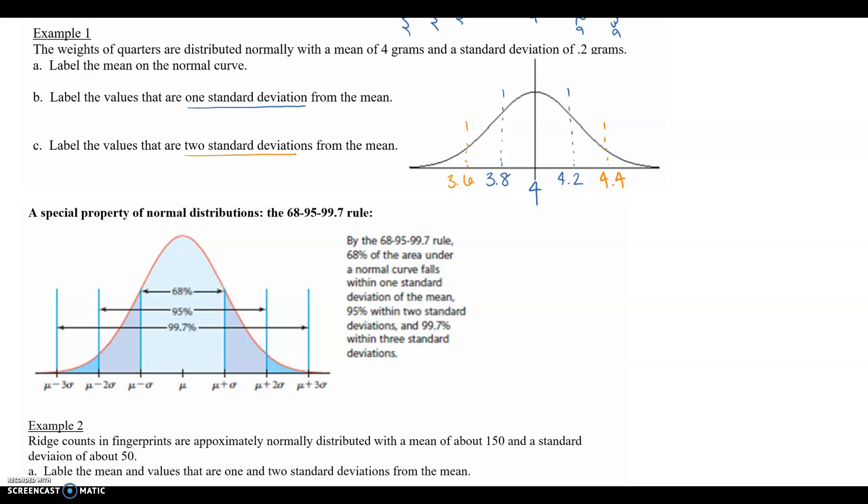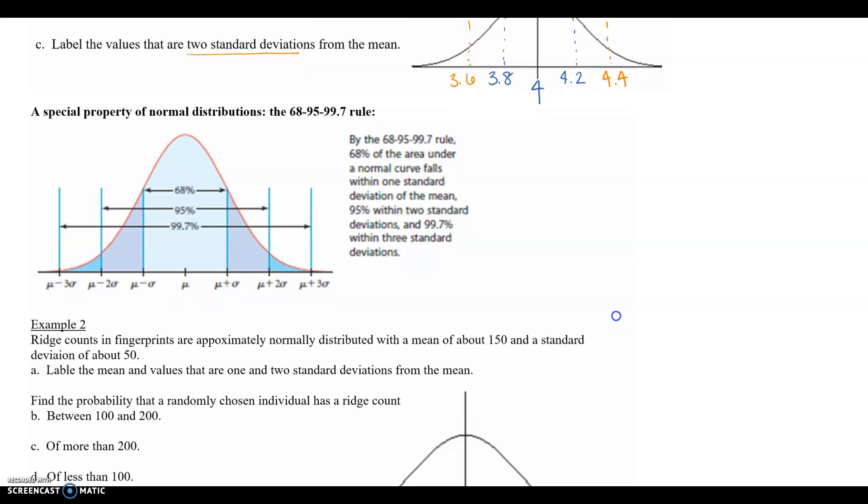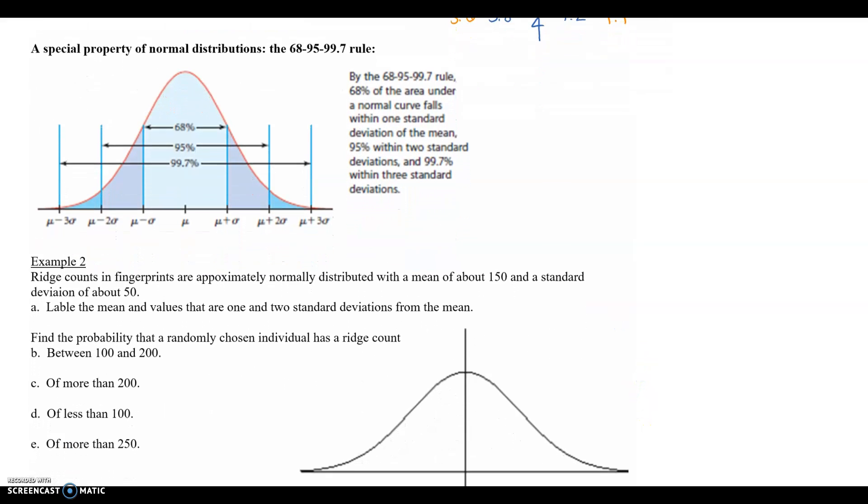So normal distributions have a special property, the 68-95-99.7 rule. This rule states that between the first two standard deviations, that's going to have 68 percent of your data. So 68 percent of the area underneath the curve falls within one standard deviation. 95 is going to be between two, and then 99.7 is going to be three. And then there's a tiny little bit on the outside because if you add all that together, you're only at 99.7, so there's a little bit outside. So we want to break this apart even more because if 68 percent is one standard deviation to one standard deviation, then from the mean to one standard deviation is only 34.